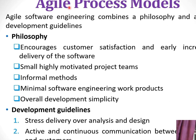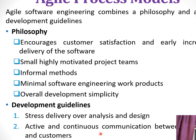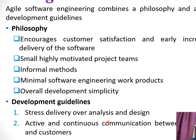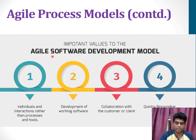The next method is the agile process model. Agile breaks tasks into smaller iterations or parts that do not directly involve long-term planning. It involves a philosophy where development guidelines encourage customer satisfaction and motivate project teams. Work products should be minimal in range, overall development should be kept simple, and several guidelines should be developed. There is a stress on delivery over analysis and design, with constant communication between developers and customers.